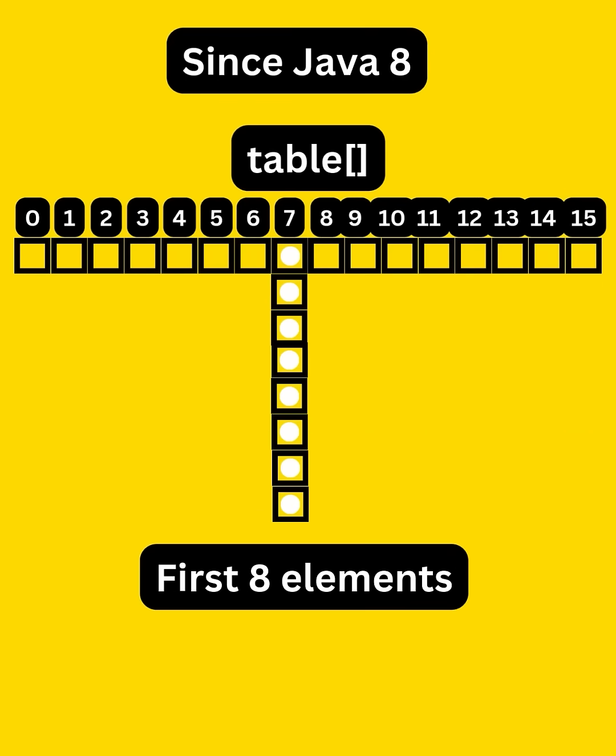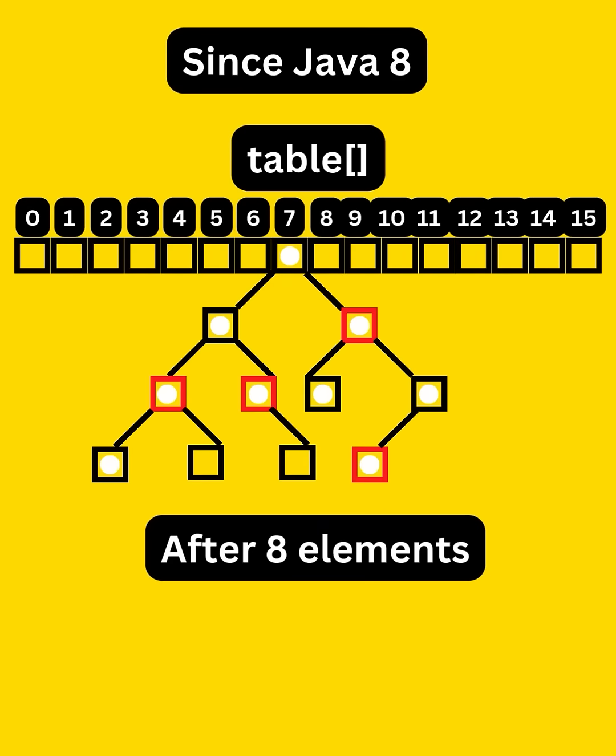So since Java 8, if the number of entries in a single bucket are less than 8, it will create a linked list. But the moment it exceeds 8, it converts the list to a Red-Black Tree, known as a self-balancing binary tree. This brings down the searching to order of n log n.